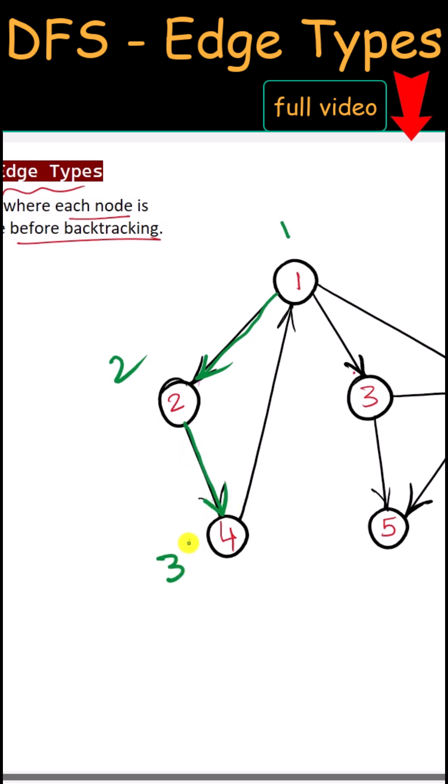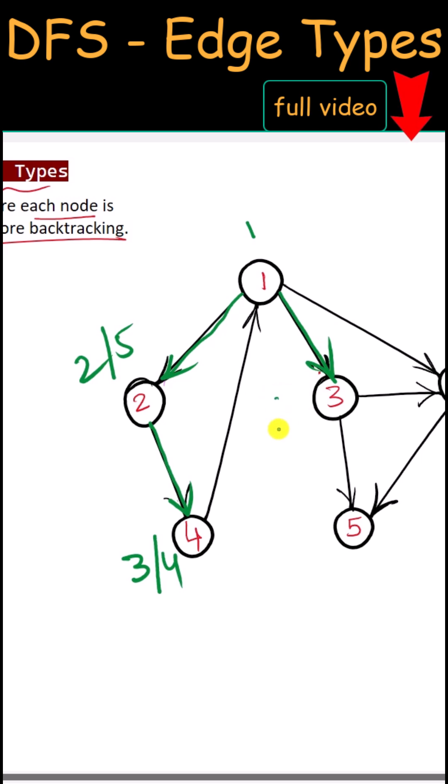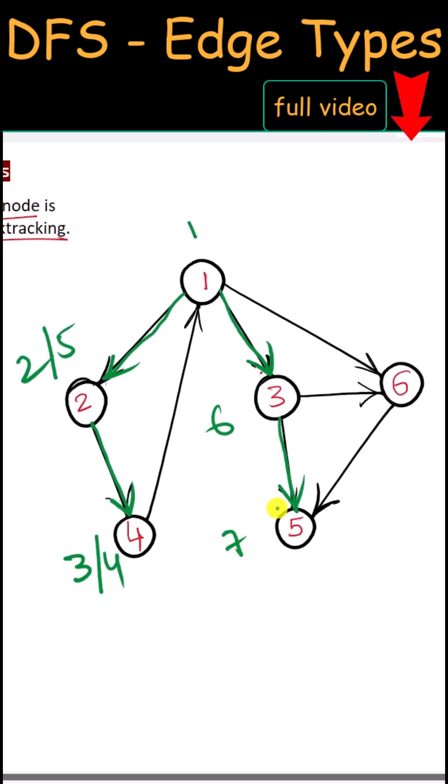Now we have to backtrack, so the ending time is 4. From here also we have to backtrack, so the ending time is 5. Now we're gonna visit 3, so the starting time is 6. Then we're gonna visit 5, so the starting time is 7. Now we have to backtrack, so ending time 8.